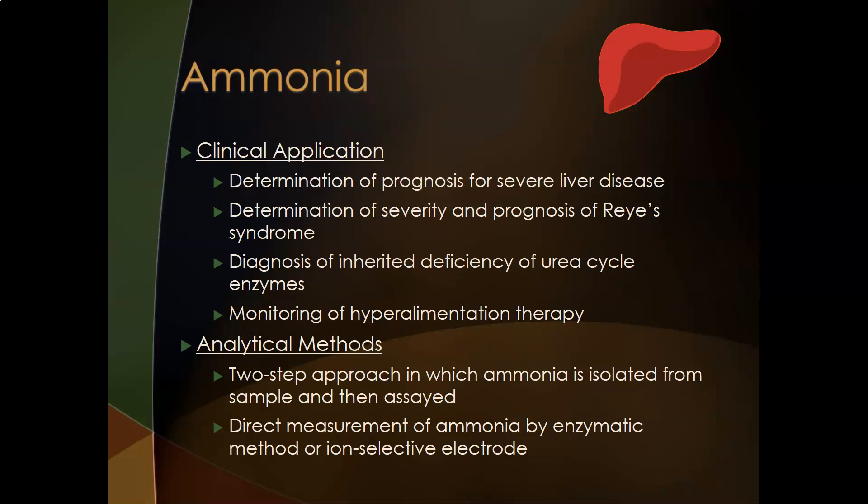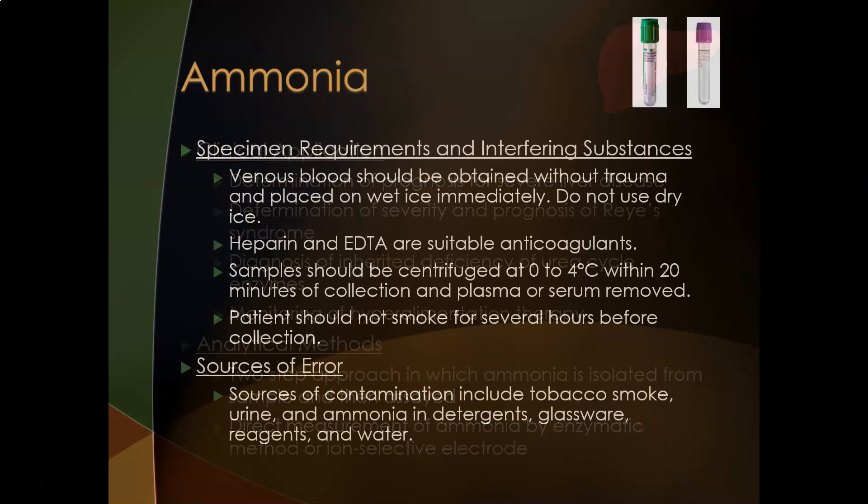The analytical methods for ammonia include a two-step approach in which ammonia is isolated from the sample and then assayed, as well as direct measurement by enzymatic methods or by ion-selective electrodes. Specimen requirements are very important here, as are interfering substances.